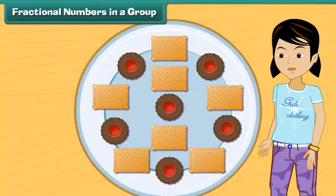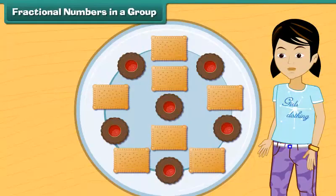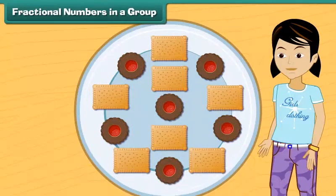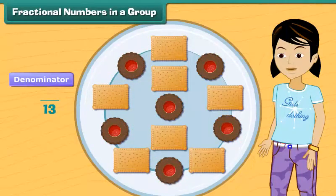Remember, we can also use fractional numbers to talk about items in a group. There are 13 biscuits on this plate, so that's our denominator.